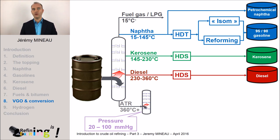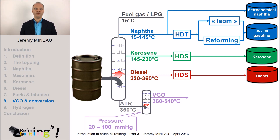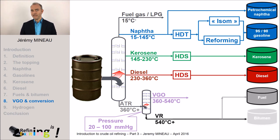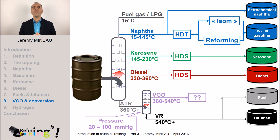At this pressure, we recover a new cut which we call VGO. VGO stands for vacuum gas oil, simply because it was produced in a vacuum column. The bottom of the column is called the VR, for vacuum residue. So we succeeded in producing a new cut — the VGO — but what to do with it? We will see that later on in the last part of this MOOC.